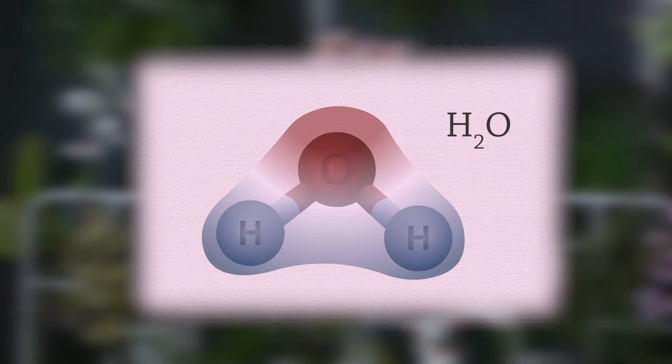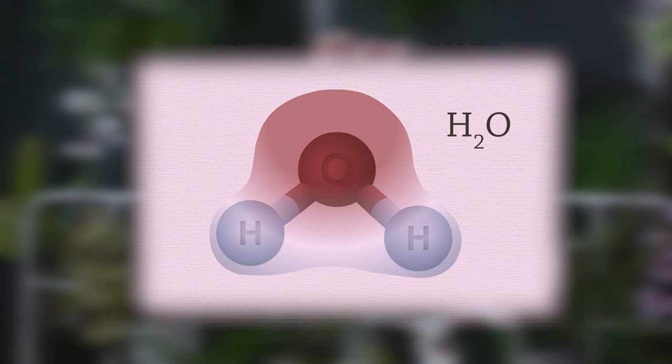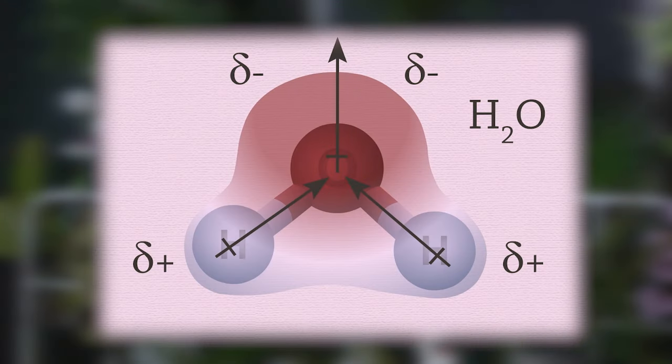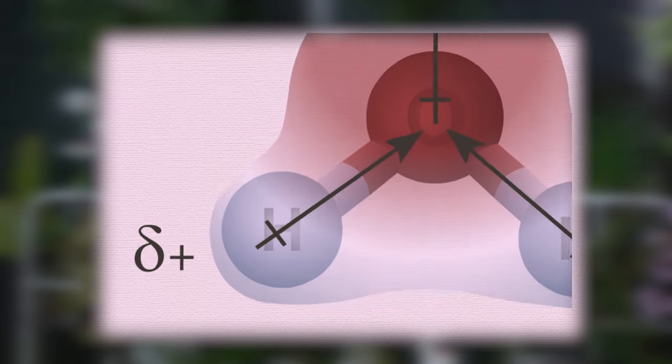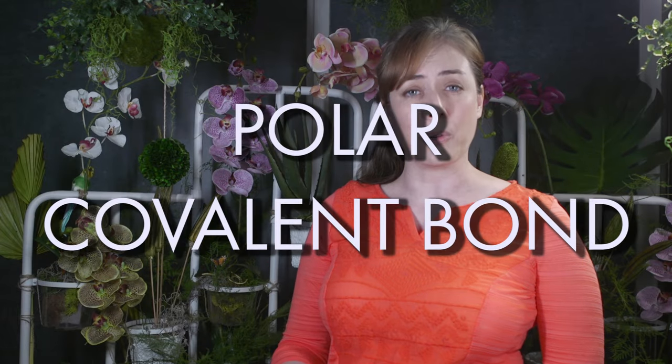Now, if there is a difference in the electronegativities of the two atoms, the electrons will spend a greater amount of time next to the atom with a higher electronegativity. Remember, electrons are always in motion, moving around in cloud-like regions called orbitals. For instance, in a water molecule, H2O, oxygen has a higher electronegativity than hydrogen. So in both of the bonds in this molecule, the electrons will spend a greater part of their time closer to the oxygen atom versus next to the hydrogen atoms. This results in a water molecule having a partial negative charge around the oxygen atom and a partial positive charge around the hydrogen atoms. We call this kind of chemical interaction a polar covalent bond.